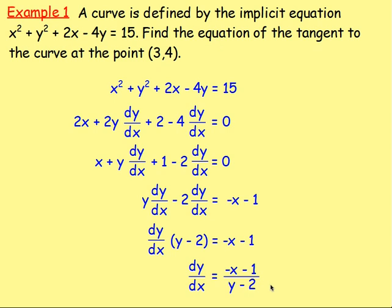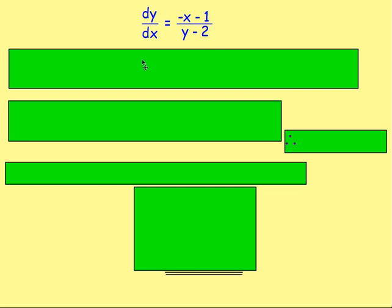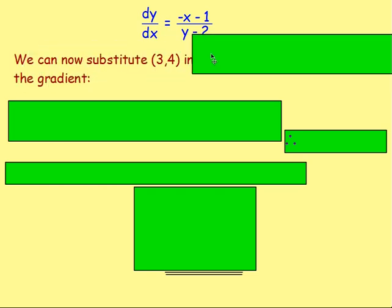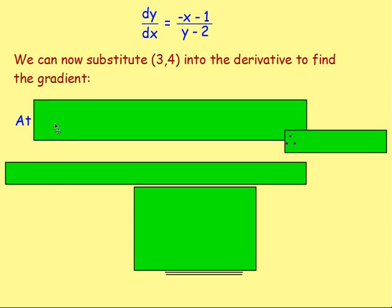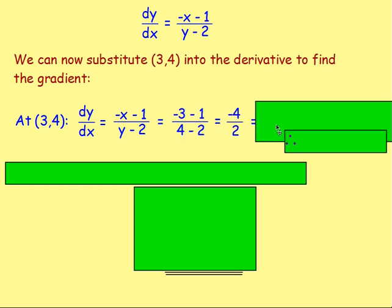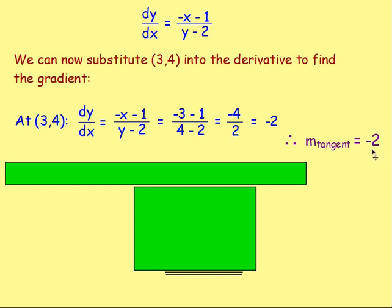Well done. So we have DY by DX — the derivative DY by DX is really our gradient. We can find the gradient at this point, 3, 4, by subbing in that point. DY by DX equals negative X take away 1 over Y take away 2. Replace X with 3 and replace Y with 4 — that gives us negative 4 over 2, which is negative 2. That means the gradient of the tangent will be negative 2.